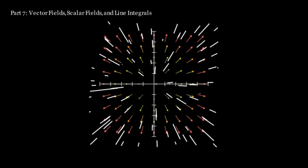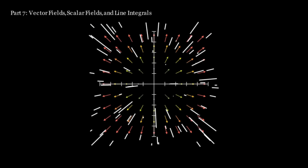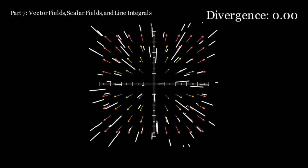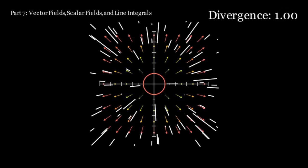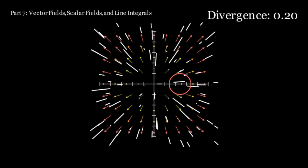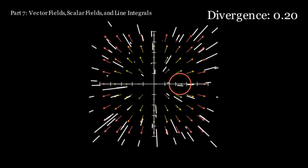Vector fields have two main properties, divergence and curl. Divergence is the amount of outflow from a certain part of a vector field. In the center, the divergence is high since everything is moving outwards. While further away, the divergence is lower since some points are moving in and some are moving out.